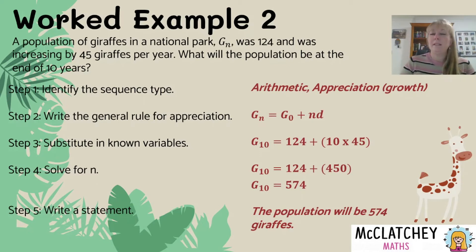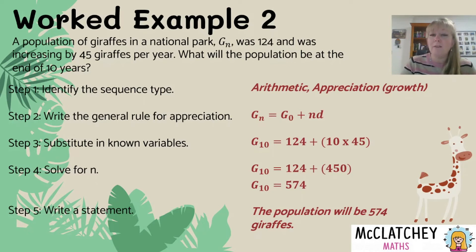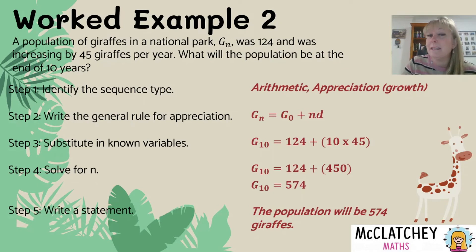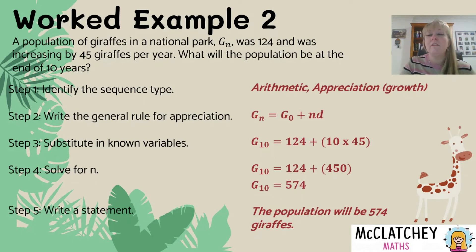If your answer came out as something like 574.3 giraffes, you need to recognize you can't have 0.3 of a giraffe — unless the giraffe is dead, it won't be counted. So round appropriately. If you get 574.3, the population hasn't reached 575 yet, so you'd round down to 574 — normal rounding rules apply. If it were 574.8, you still wouldn't round up to 575 because the park hasn't quite reached that number yet; it will the following year. Most marking schemes accept either direction, though fortunately in this question it came to a perfect answer of 574 with no rounding required.